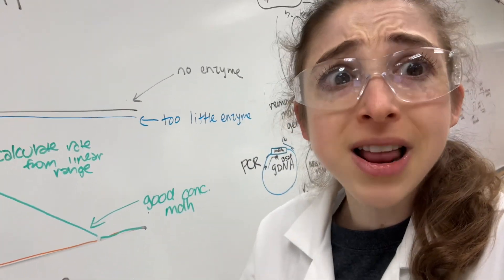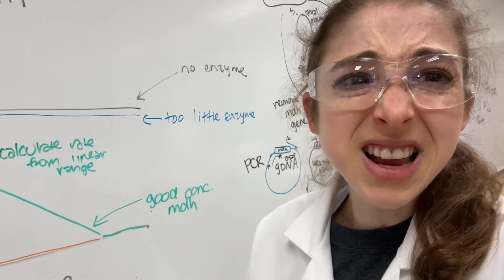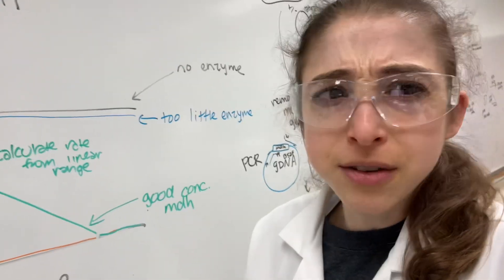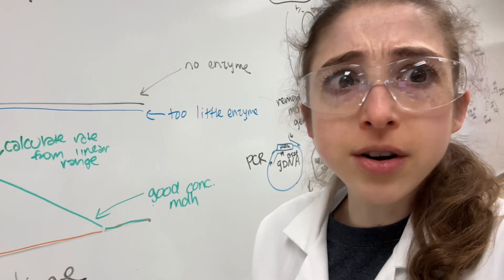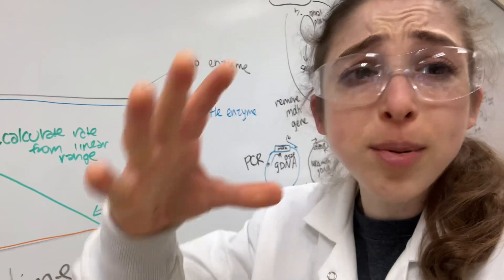And each 30 microliter aliquot is enough for 3 times 150 assays. So, that's 450 assays, which is a ton, a ton, a ton. And that's just one tube and we have a whole box of tubes.